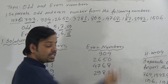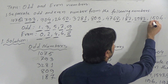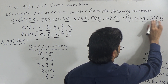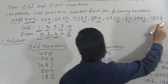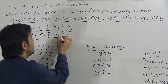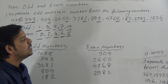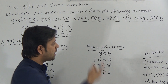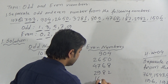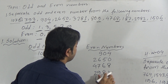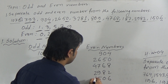Now the last number today is 1506. Here 6 is in the unit place or ones place, and 6 is even. Since the unit place is even, the number 1506 is even. So we write 1506 under the even numbers.